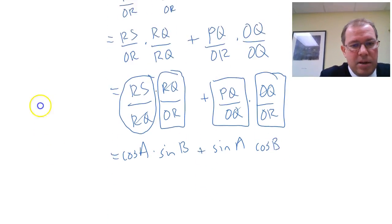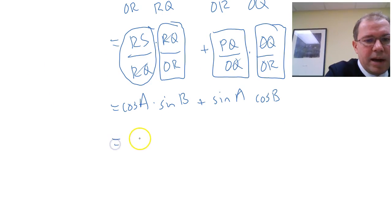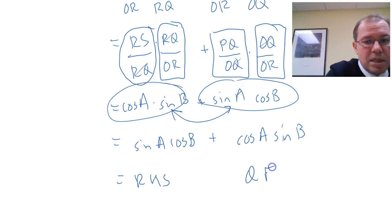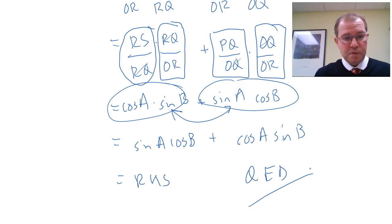And we're nearly there. Notice I've just got mine the other way around. If I just swap these two over, these two terms here, because you can add in any order, I'll write the sine(A)cosine(B) first, plus the cos(A)sine(B) second, and that is equal to my right-hand side QED, quod erat demonstrandum, which was to be proved.